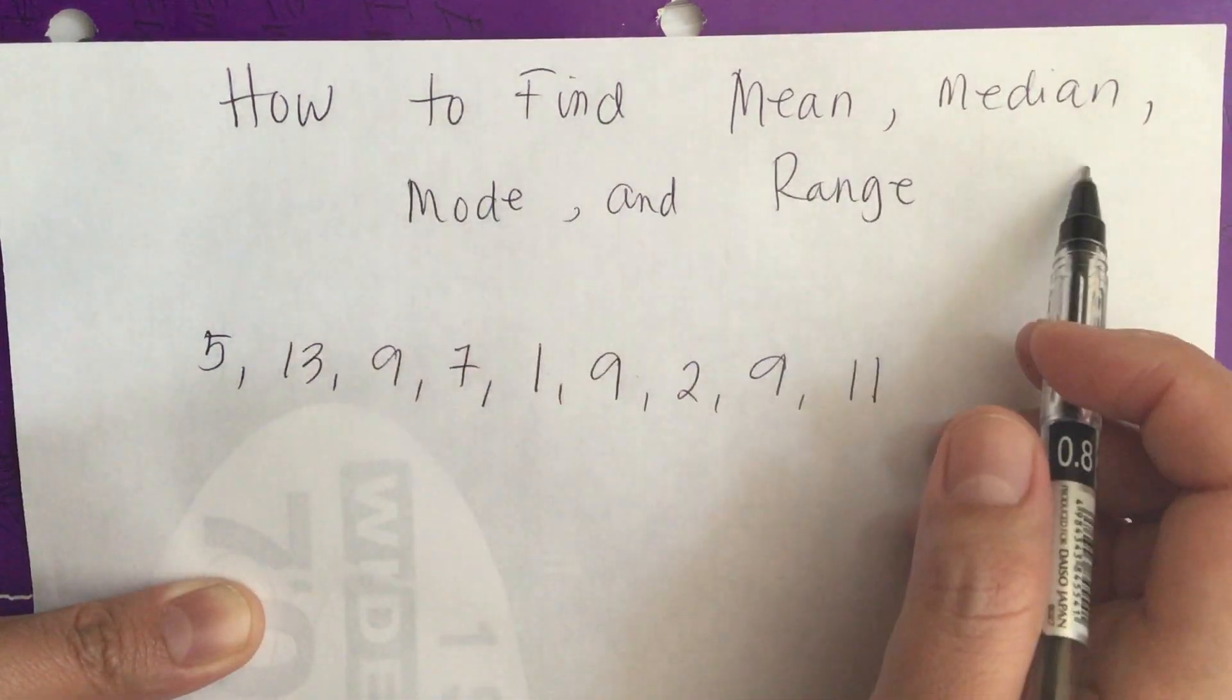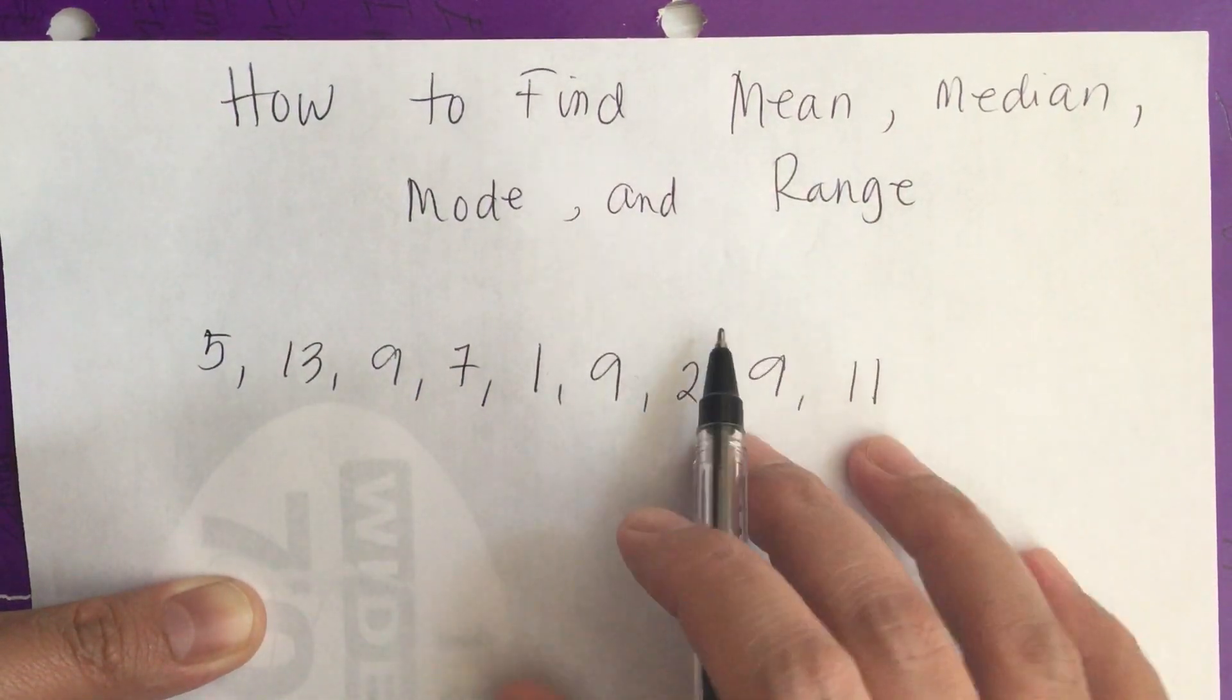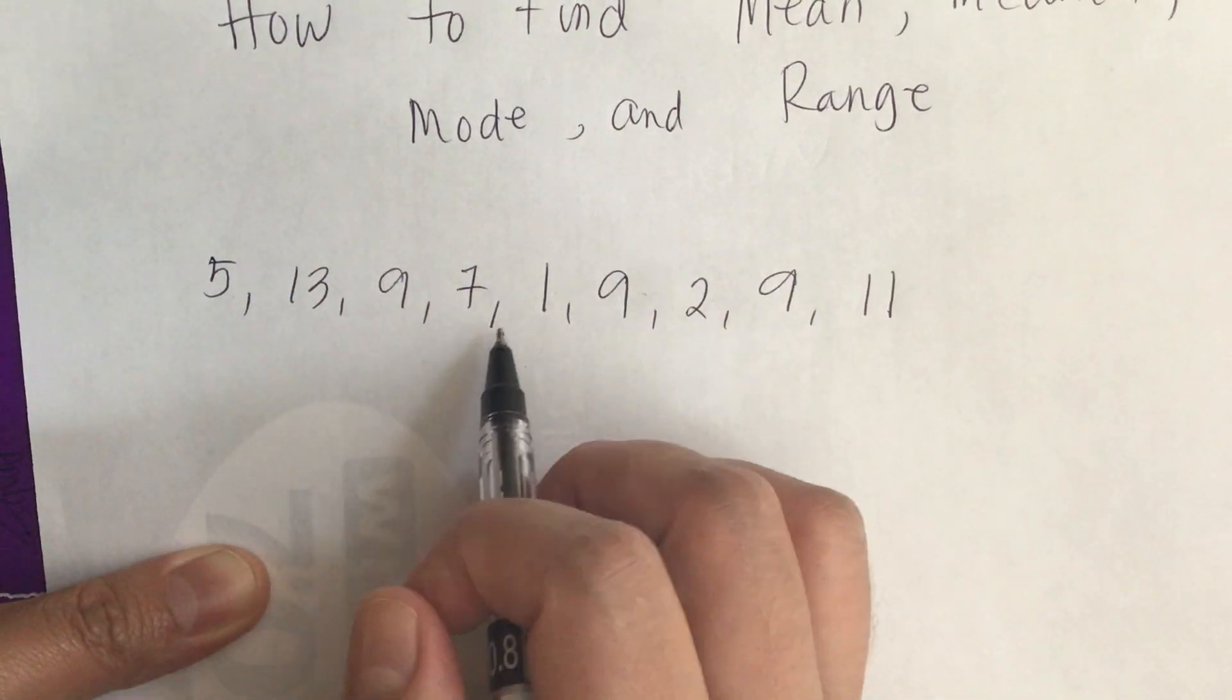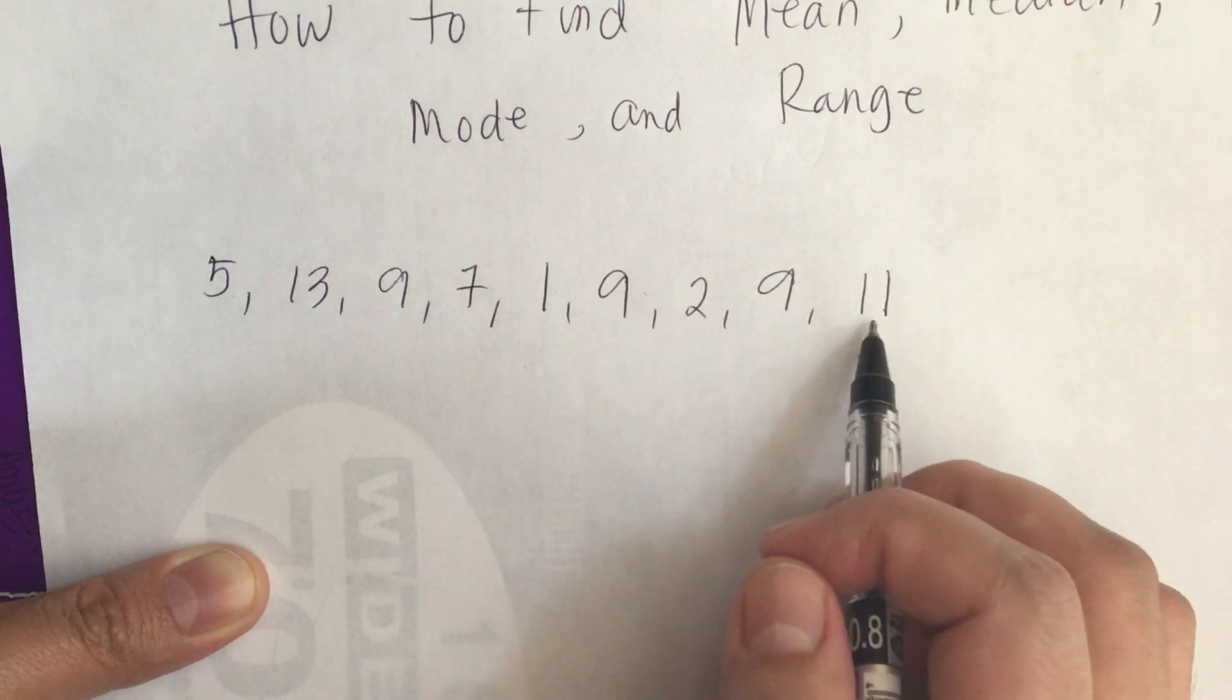How to find mean, median, mode, and range. We have this data set: 5, 13, 9, 7, 1, 9, 2, 9, and 11.